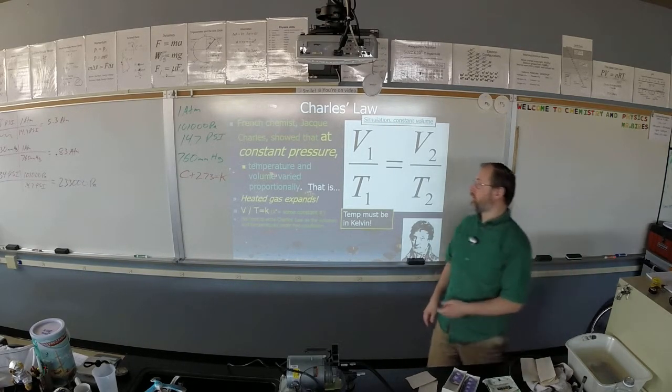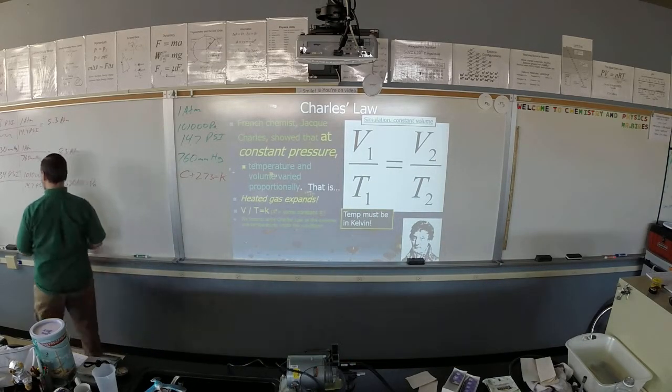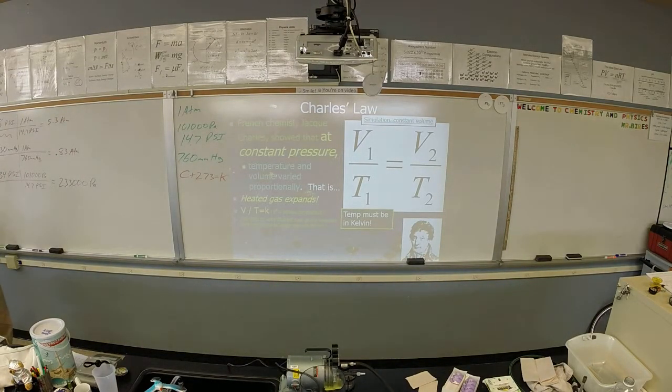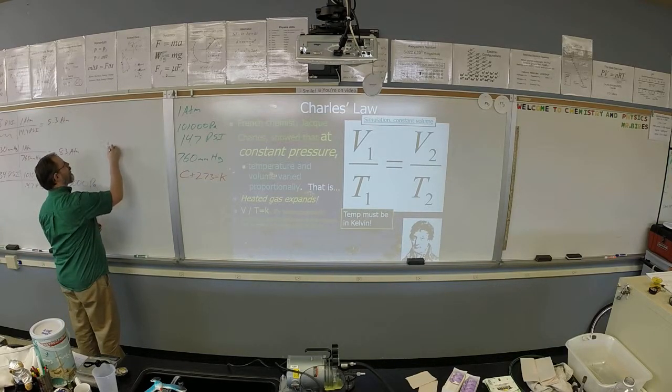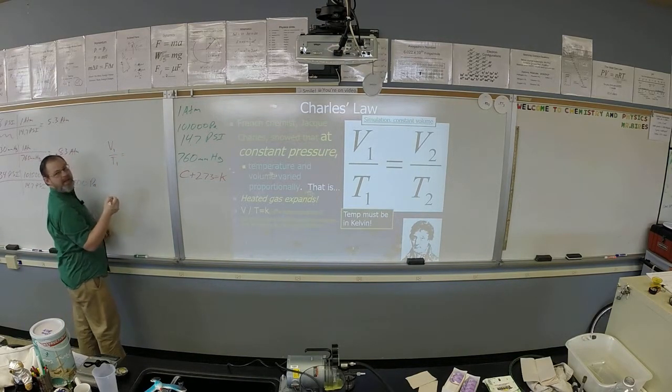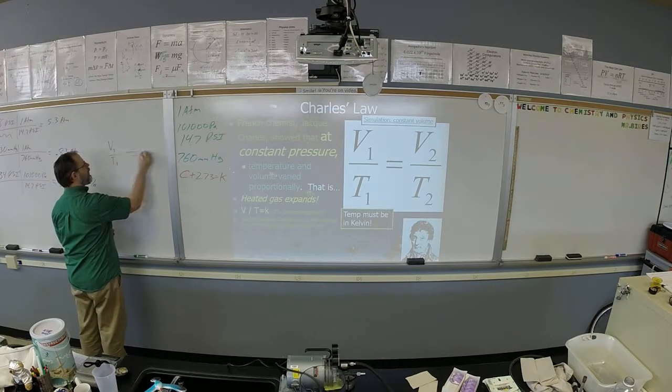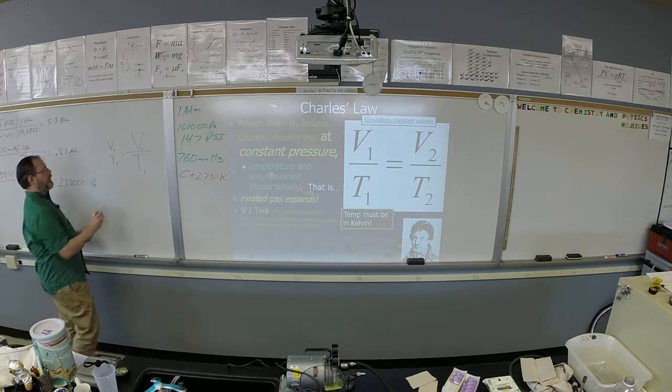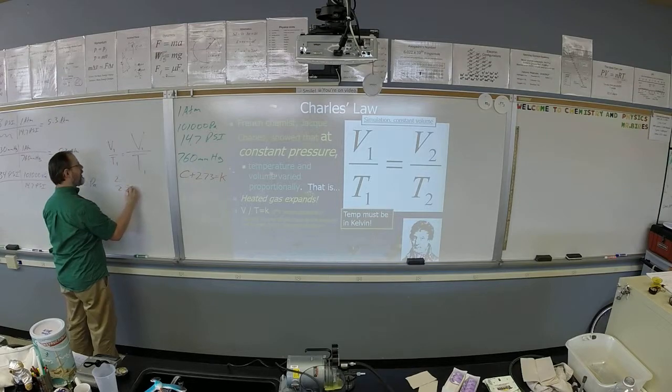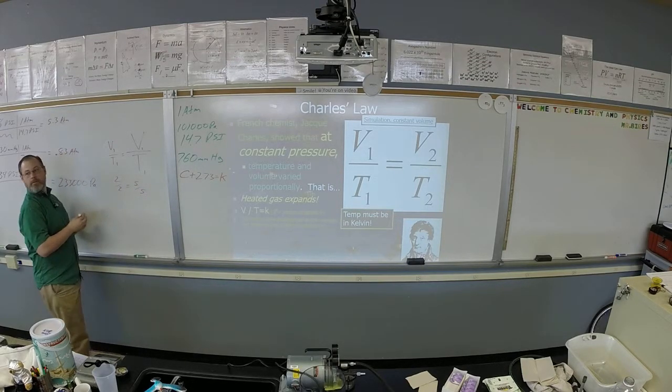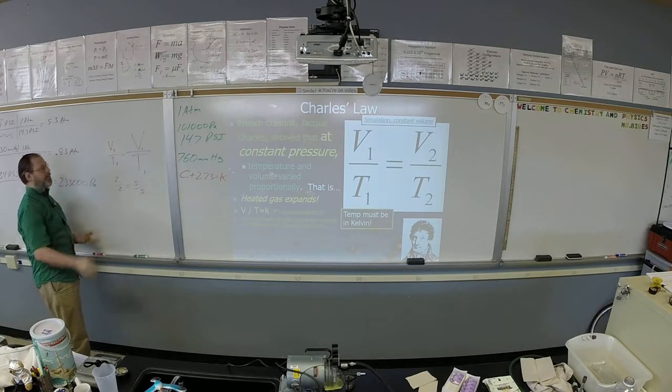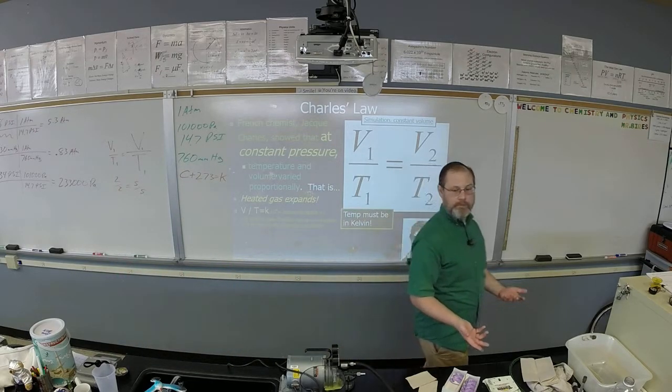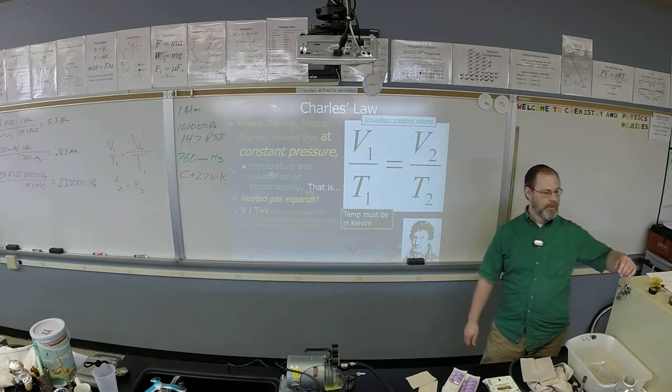For those who are having a little trouble seeing the conceptual idea of the formula, it's kind of like the peep in the room temperature had a volume of one and a temperature of one, and then we heated up the peep and the temperature got bigger, and since there's an equal sign that required the volume to get bigger. So just like two over two is equal to five over five. As we increase the temperature we increase the volume. That's Charles's Law.